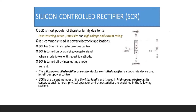Among all power devices, the SCR is the most popular of the thyristor family due to its fast switching action, small size, and high voltage and current rating. It is commonly used in power electronic applications and has three terminals: anode, cathode, and gate. SCR is turned on by applying a positive gate signal when the anode is made positive with respect to the cathode. Similar to the PNPN diode, an SCR is turned off by interrupting the anode current via voltage applied at the gate.